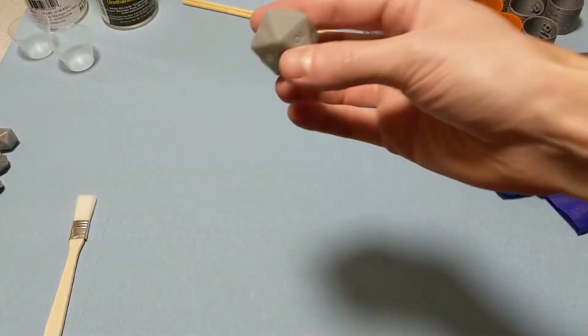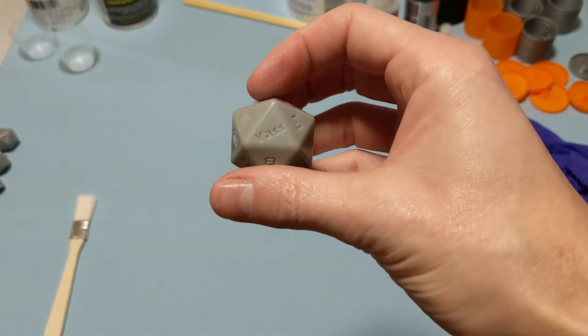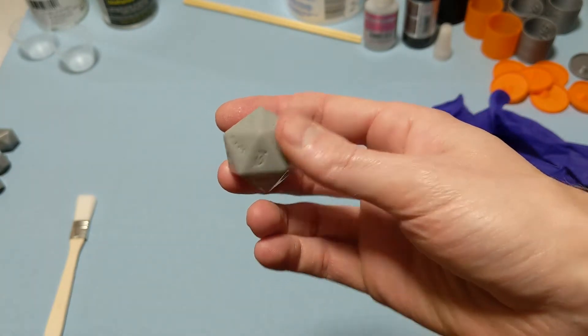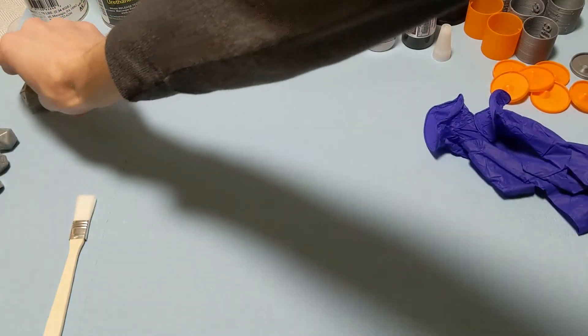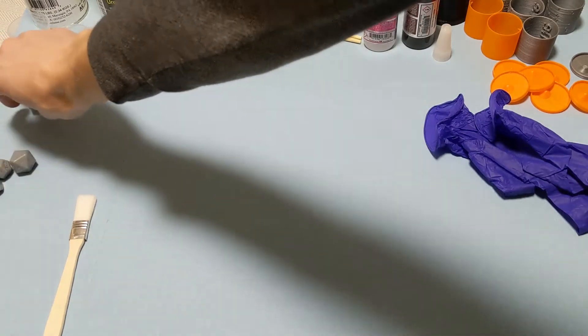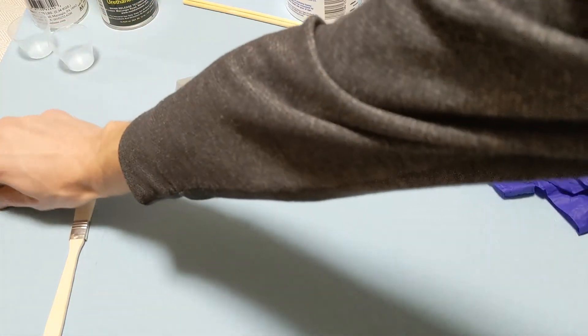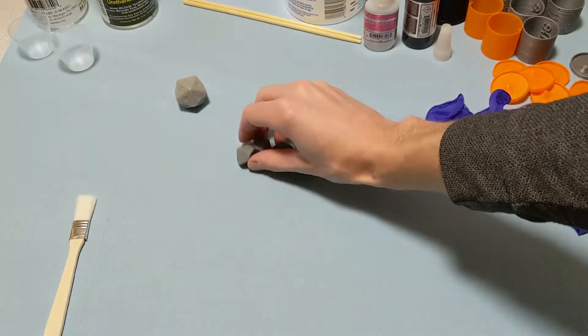I'm making more molds of 3D printed dice. I have a new design that I want to do for this video, and I'm going to do it the recommended way this time to try and prevent cure inhibition. You know when you pop open a mold and it's nothing but goop inside because it hasn't cured due to the chemical reaction with your resin.